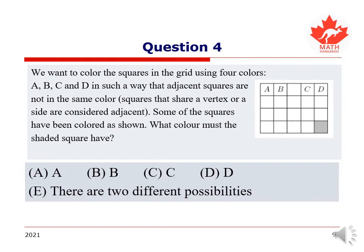Here is our fourth question. We want to color the squares in the grid using four colors A, B, C, and D in such a way that adjacent squares are not in the same color. Squares that share vertex or side are considered adjacent. Some of the squares have been colored as shown. What color must a shaded square have? A, color A, B, color B, C, color C, D, color D, or E, where there are two different possibilities for colors.